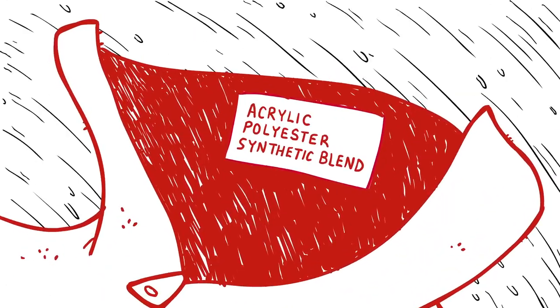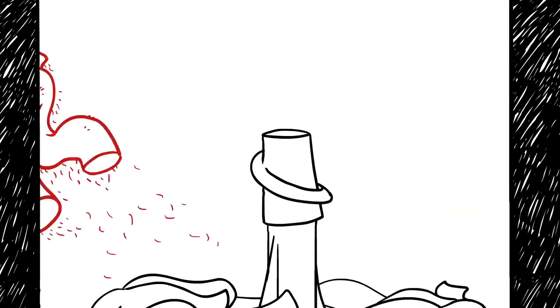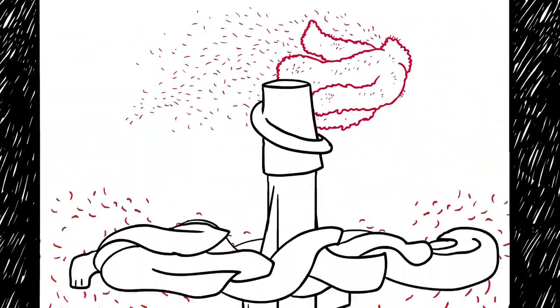Every time we wash synthetic fabrics, whether they're made from recycled bottles or brand-new materials, super-tiny pieces of plastic, called microfibers, wash off and flow down the drain. Up to hundreds of thousands each wash. The older our clothes get, the worse the problem can become. Yikes!